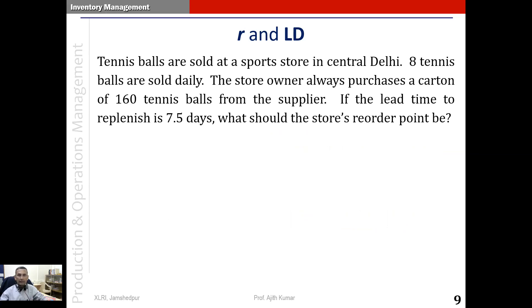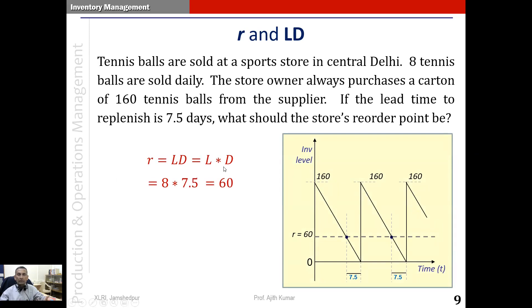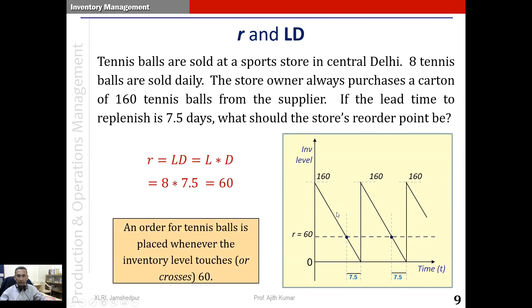Let's look at a simple example. Tennis balls are sold at a sports store in central Delhi. Eight tennis balls are sold daily, and the store owner always purchases a carton of 160 tennis balls from the supplier. If the lead time to replenish is 7.5 days, the reorder point should be 60, applying the formula R equals L times D. Looking at the graph, the constant demand rate gives a linear equation with instantaneous replenishment. When inventory comes down from 160 and reaches 60, the owner places the next order, and replenishment arrives exactly when inventory reaches 0, after 7.5 days.